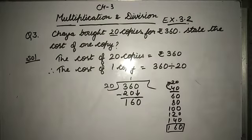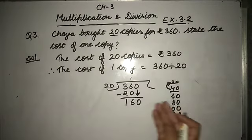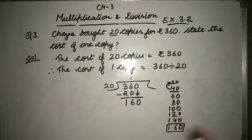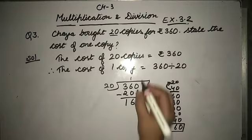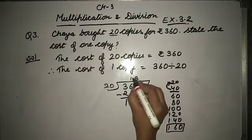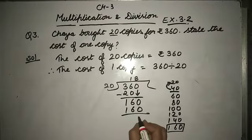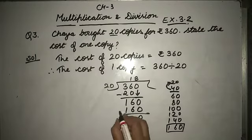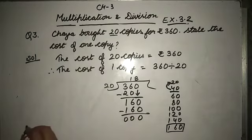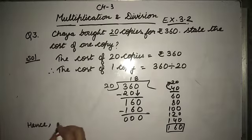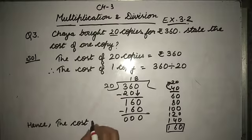It is neither greater than or lesser than 160. So this is the same number. How many times will it? 8. 20×8=160. Now remainder is 0. Understood? So what will you write? Hence, the cost of one copy...